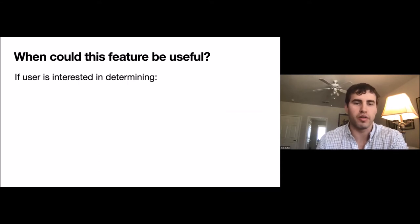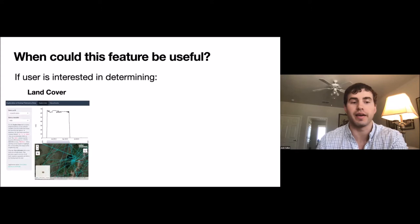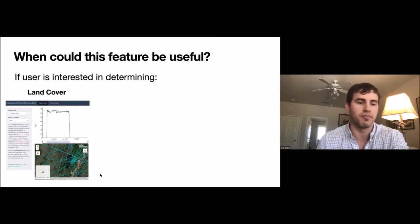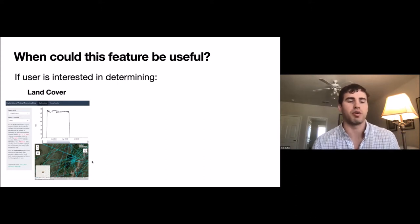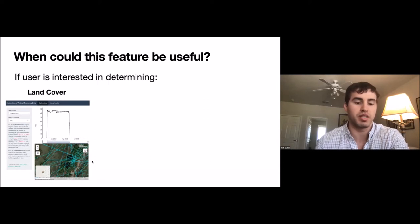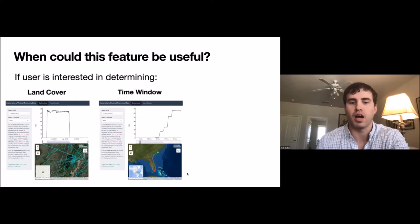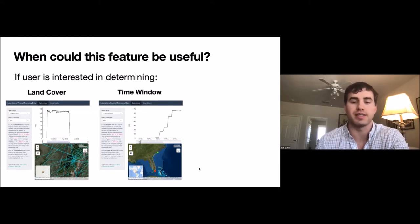When could this feature be useful? There are a number of instances, such as determining land cover. With satellite imagery as your base map, you can get really fine-scale spatial detail and uncover locations the animal is using that you didn't realize before. We came across that with our snail kite data, where they were using water bodies at power plants as sources of wetlands to search for their snail prey — especially common in juvenile birds. You might also be interested in a particular window of time, such as a migratory period, when the animal is leaving, dispersing, and eventually arriving and settling at a new location.